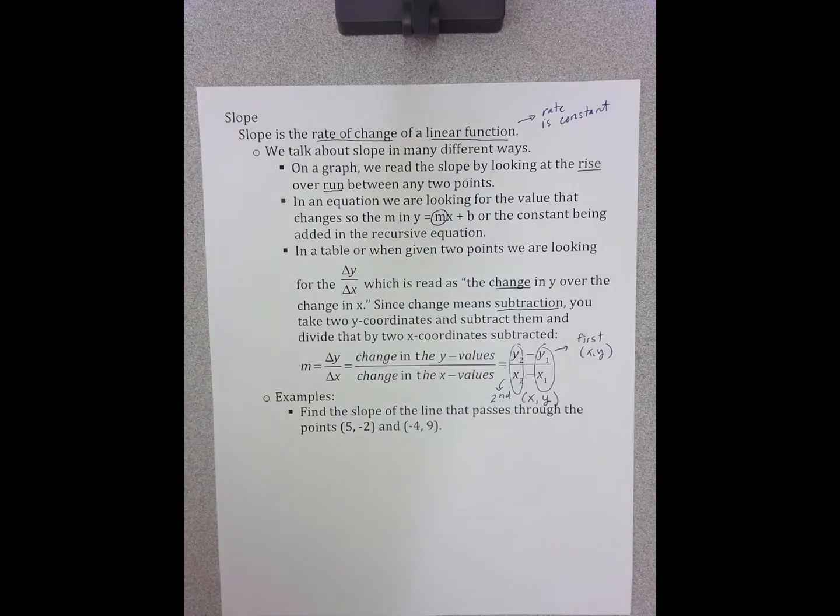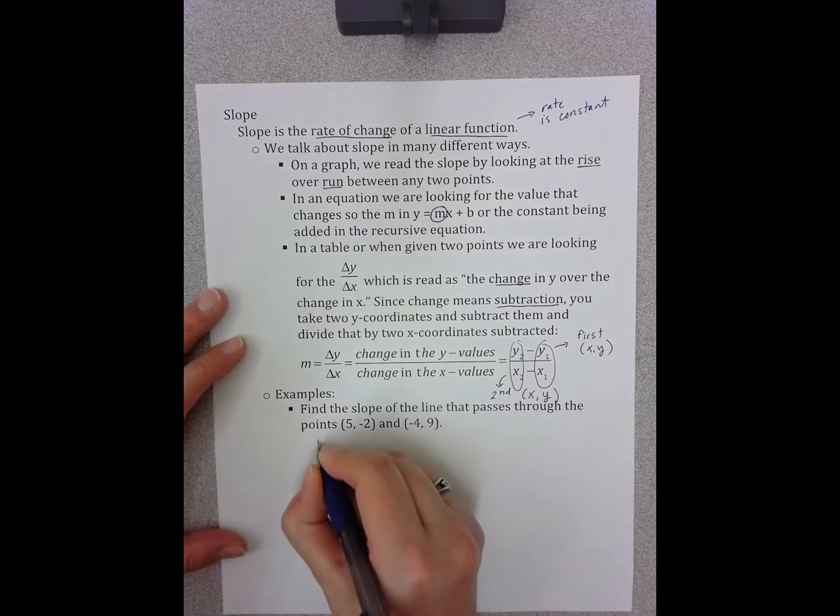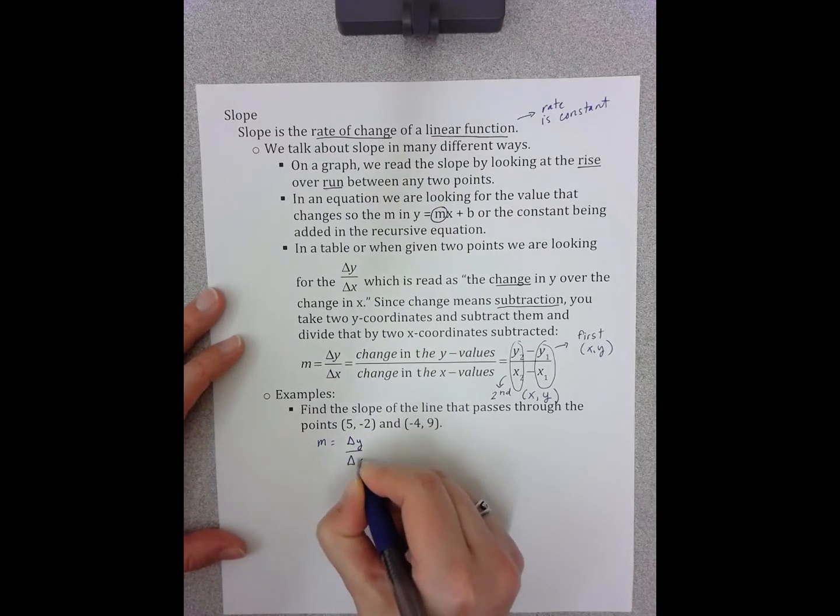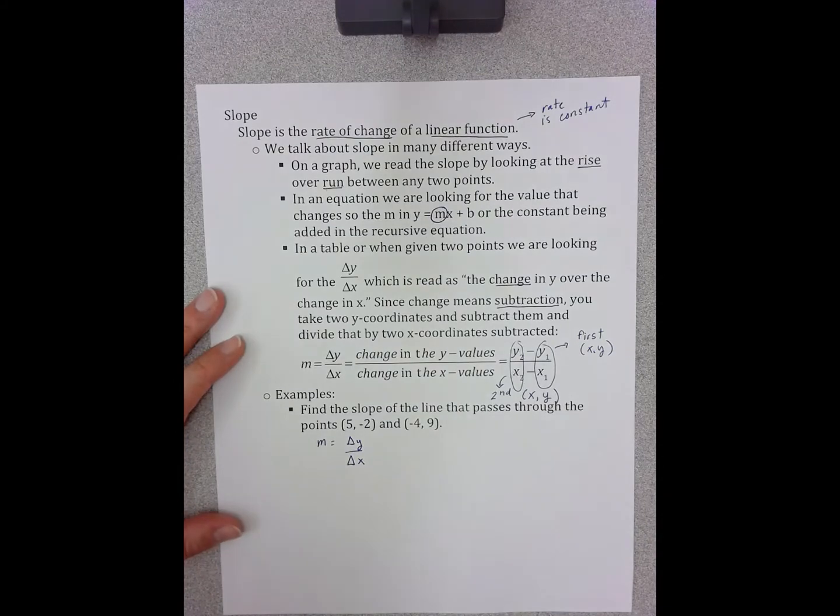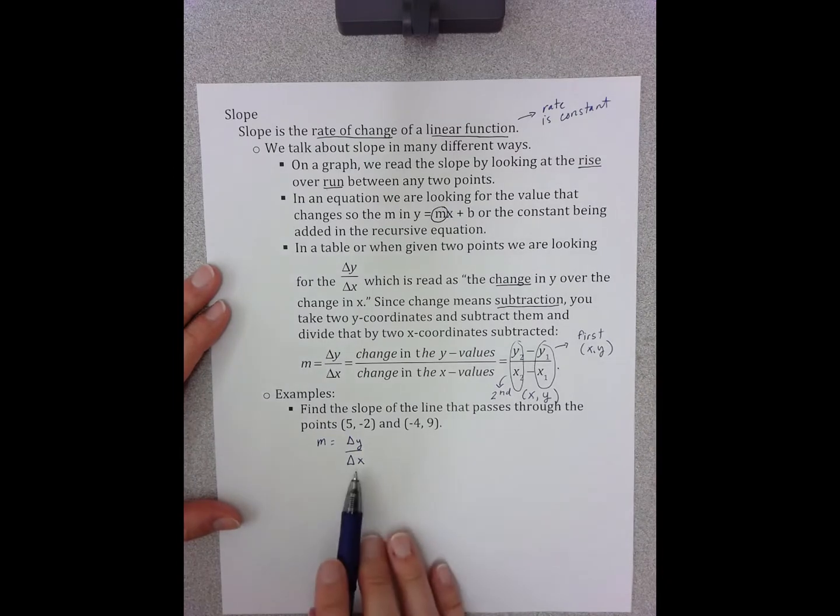So let's look at a couple of examples. I prefer to always think about slope as the change in y over the change in x, and not necessarily memorize this formula, which is maybe something that you are used to. You may have memorized this in the past, and I'm going to argue that it's actually much to your benefit to change your thinking slightly and really go to the change in y over change in x.